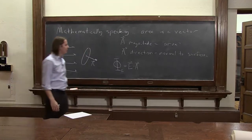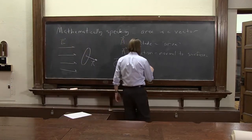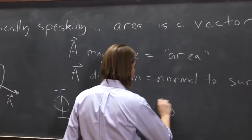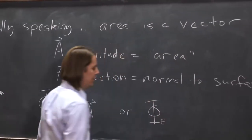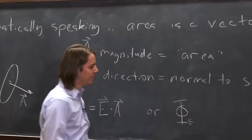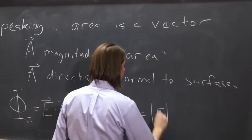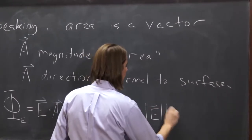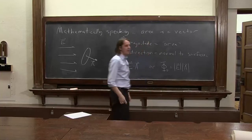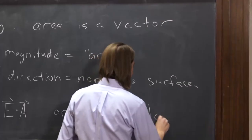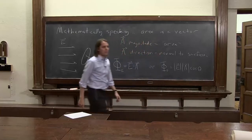In most of the problems we do in freshman physics, you want to think of it more in polar coordinates, and you'd write it like this. Phi e, the flux of the electric field, is the magnitude of the e field times the magnitude of the area vector times the cosine of the angle between them.